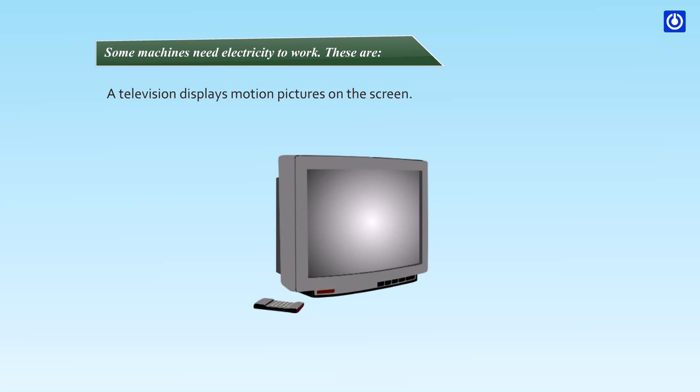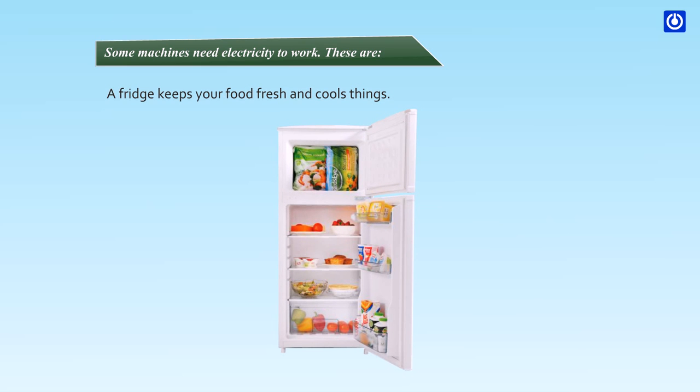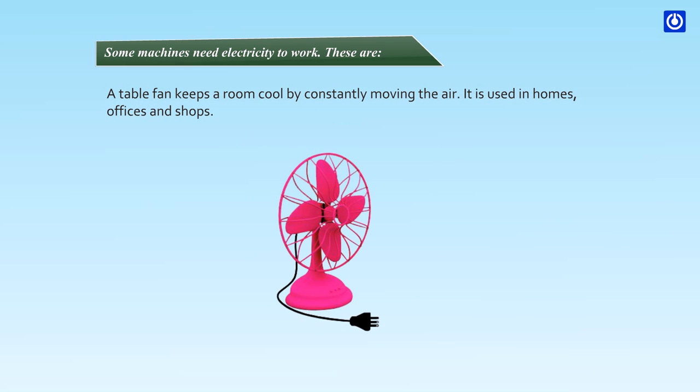Some machines need electricity to work. A television displays motion pictures on the screen. A juicer is used for squeezing juice from fruits. A fridge keeps your food fresh and cools things. A washing machine washes clothes quickly. A table fan keeps a room cool by constantly moving the air.